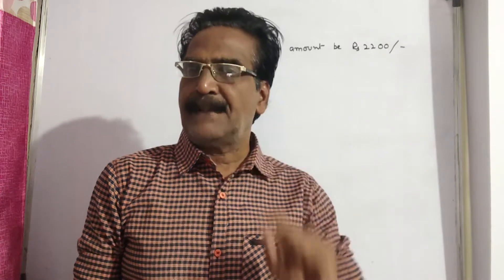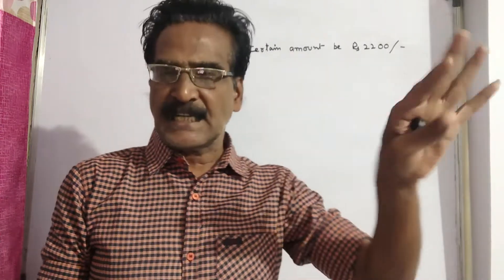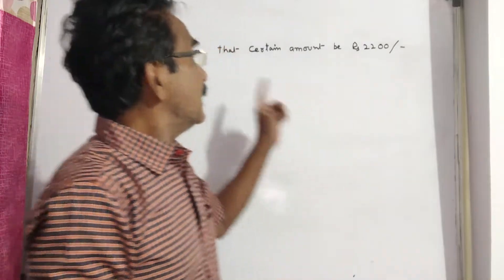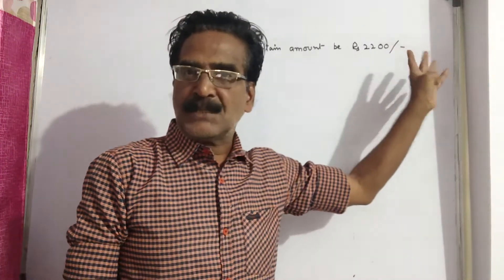A person gets 22 kg sugar more for a certain amount. Say that certain amount is rupees 2200. You can take any value for that certain amount, friends, preferably a multiple of 22.